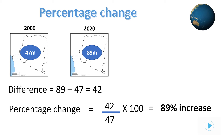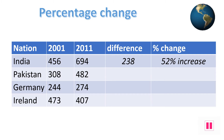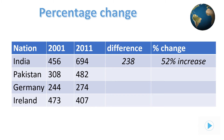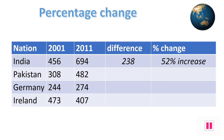We can calculate that this comes to 89%. Look at the worked example on the screen before moving on. You can see a classic table using geography. The first set of answers have been done for you with India, showing the difference between 2001 and 2011 being 238, which works out as a 52% increase.